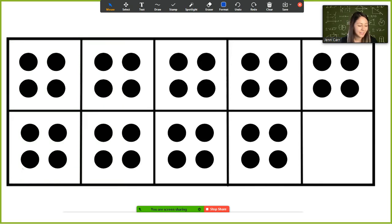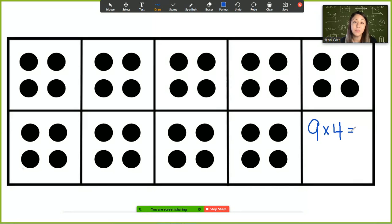For this one, you might have seen again that we have nine groups. But in each group, we have four this time. So we know that we have nine groups of four. Some of you might just know that fact, but if you didn't, you might be thinking, I don't know nine groups of four,